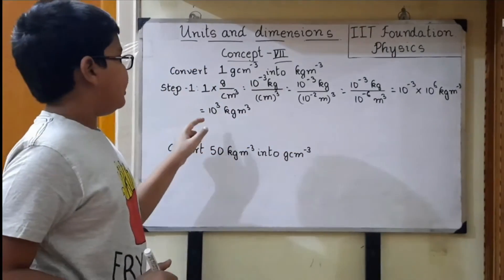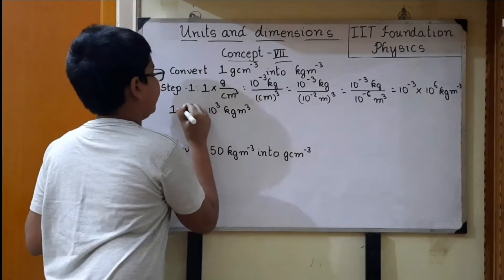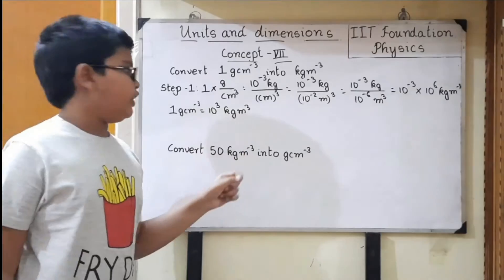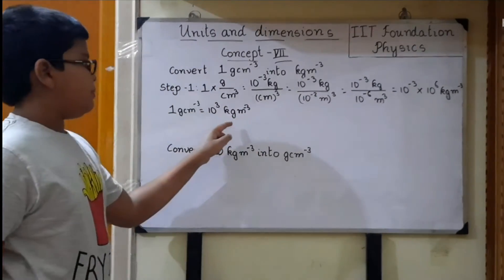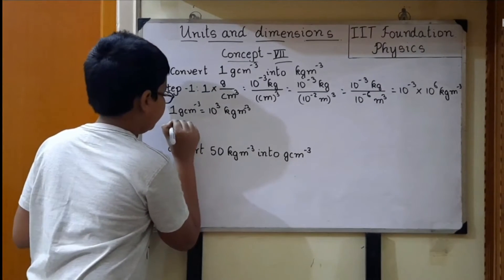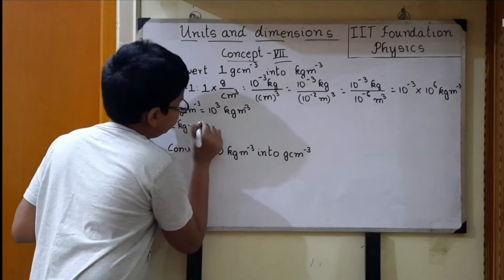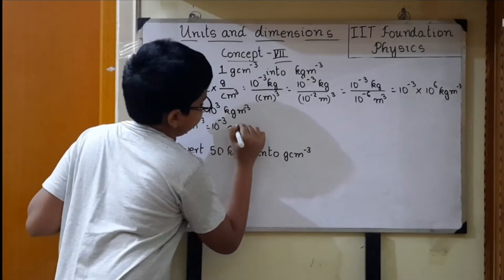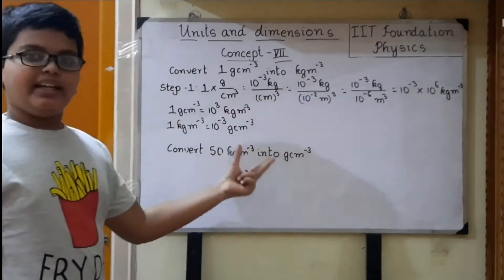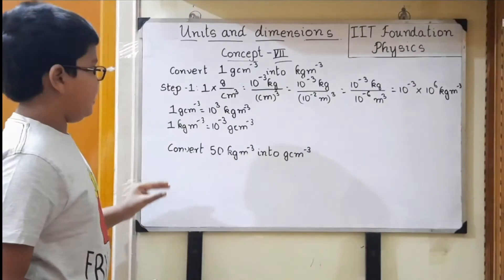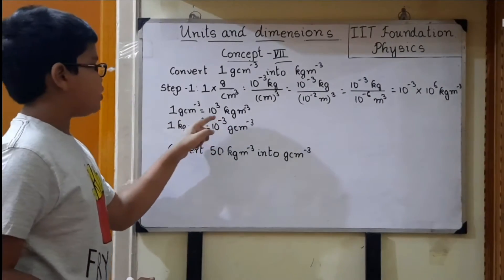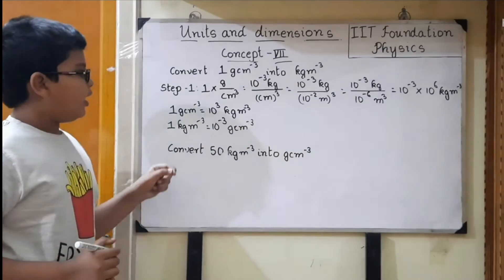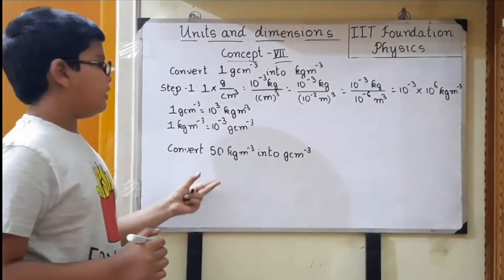So 1 gram per centimeter cube equals 10 power 3 kg per meter cube. And 1 kg per meter cube equals 10 power minus 3 gram per centimeter cube. These two are the important formulas for density: 1 gram per centimeter cube equals 10 power 3 kg per meter cube, and 1 kg per meter cube equals 10 power minus 3 gram per centimeter cube. Using these formulas we can convert density units easily.